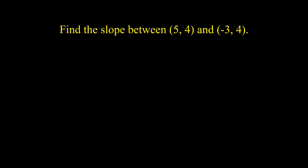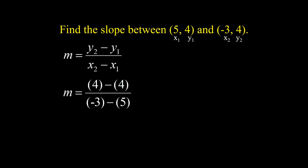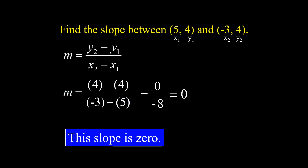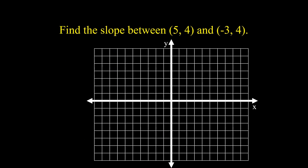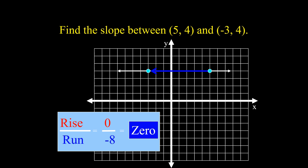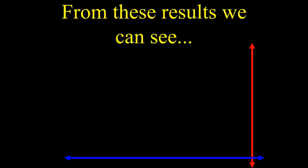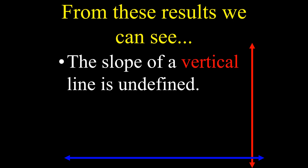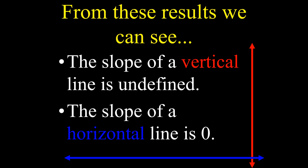How about the slope between (5, 4) and (-3, 4)? Using the slope formula: x sub 1 is 5, y sub 1 is 4, x sub 2 is -3, and y sub 2 is 4. Therefore: 4 minus 4 over negative 3 minus 5 equals 0 over negative 8, so the slope is 0. Plotting (5, 4) and (-3, 4) and connecting them forms a horizontal line. From these results, the slope of a vertical line is undefined, and the slope of a horizontal line is 0.